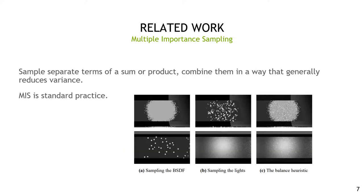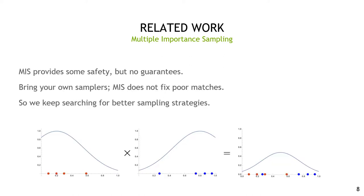Multiple importance sampling is yet another indispensable tool that is standard practice in path tracing. MIS is a way to take samples from separate terms of a sum or product and combine them in a way that generally reduces variance. While MIS is a nice safety net against poorly performing individual sampling strategies, it doesn't give you any guarantees, and MIS can't really help you if you have no sampling strategies that match the product. This means it's always useful to continue searching for better sampling strategies.